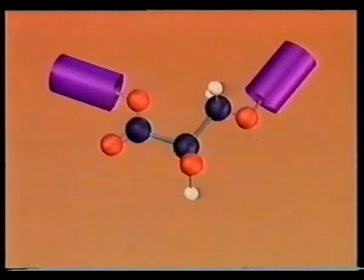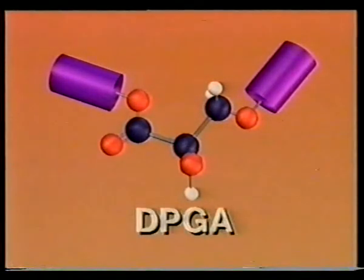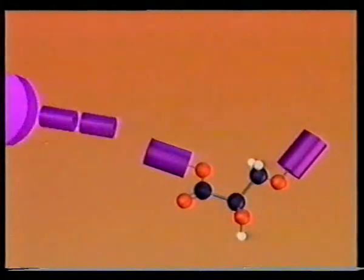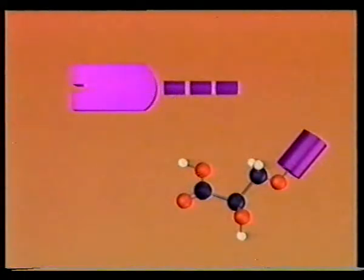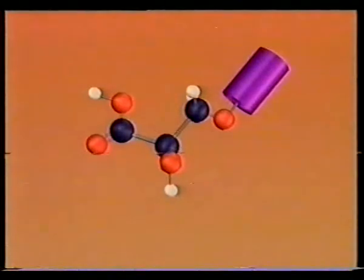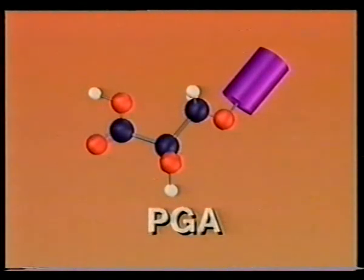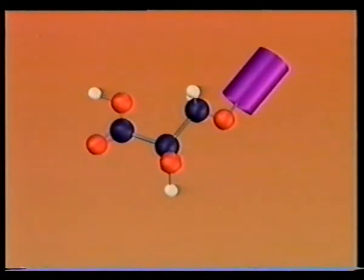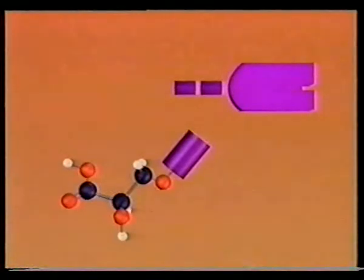Reaction seven. The molecule of DPGA encounters ADP. The phosphate is transferred to form ATP, leaving behind phosphoglyceric acid, or PGA. From here on, glycolysis is devoted to eking out just one more ATP molecule from the single PGA.